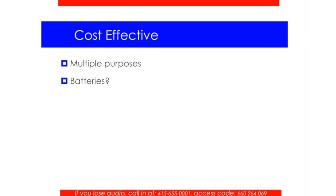One example: when Nintendo Wii first came out, teachers went absolutely bananas over putting it in, but the number one problem was the batteries. Whether students would leave them on or teachers forgot to turn them off, they were constantly having to replenish batteries. Even in the household, buying toys with batteries is something you cringe at. Think about that in school when you have all your children all day long. Something that seems cheaper may come with strings attached, such as batteries, that can become a hassle.